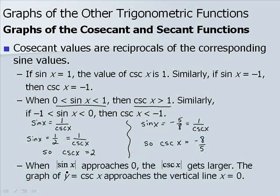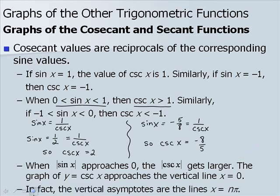When the absolute value of sine of x approaches 0, the absolute value of cosecant of x gets larger. The graph of y equals cosecant x approaches vertical lines — the vertical asymptotes are the lines x equals n times pi, or any multiple of pi.